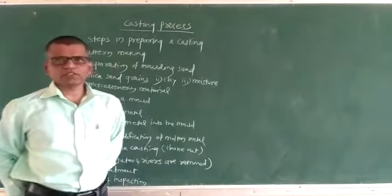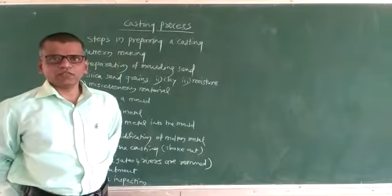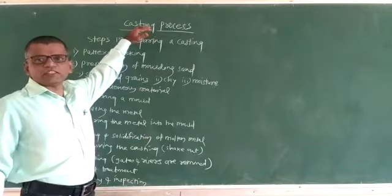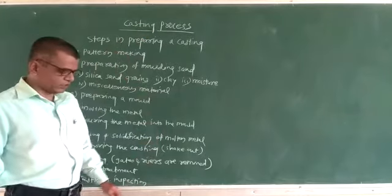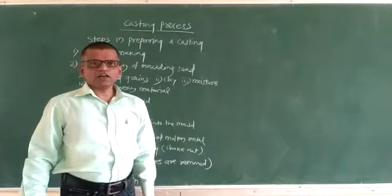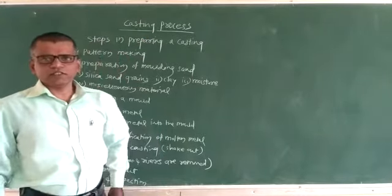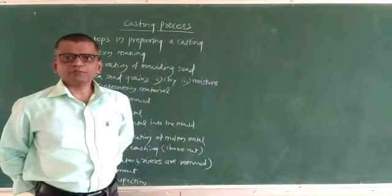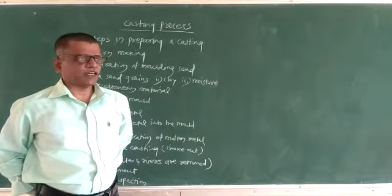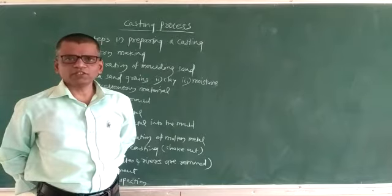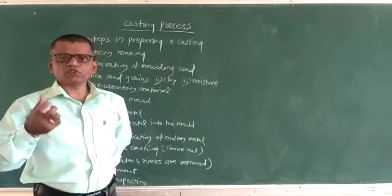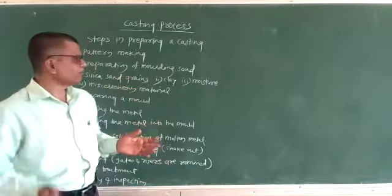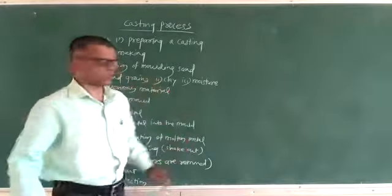Good morning dear students. Today I am going to teach you the basic process, that is the casting process. A molten metal is poured into a cavity of the desired shape that is made in a molding sand, and after cooling and solidification the object is called a casting. So what is that actual basic process?